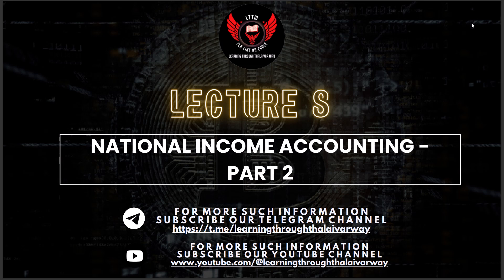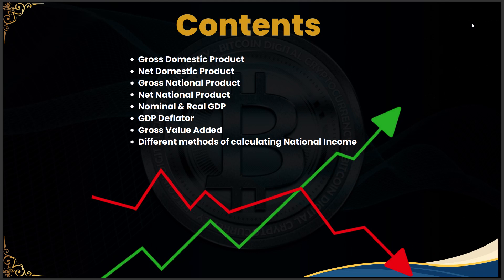Hello everyone, welcome back to the channel. We are into national income accounting. In this lecture, we will be dealing with the next few parts of the chapter. We will be covering gross domestic product (GDP), net domestic product (NDP), gross national product (GNP), net national product (NNP), nominal and real GDP, GDP deflator, gross value added (GVA), and the different methods for calculating national income. Let's look into each topic one by one.